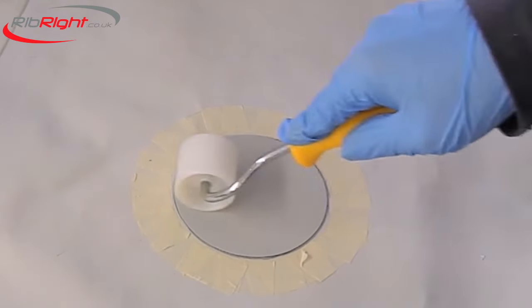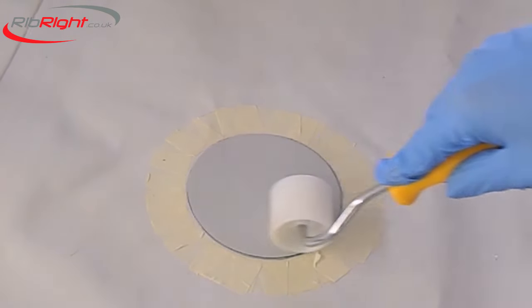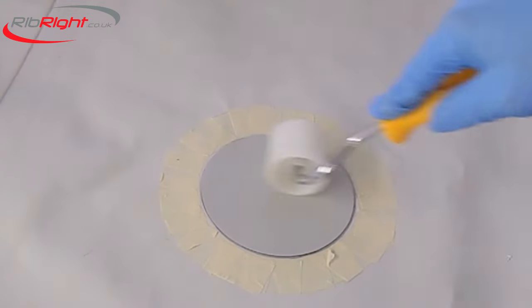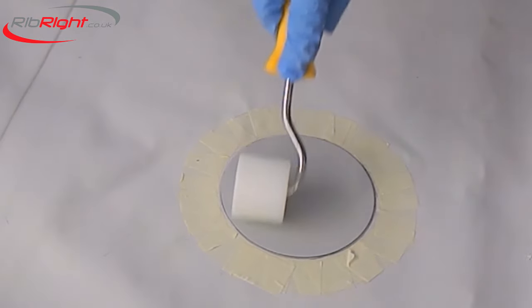Then use your roller to roll from the middle out. This will ensure that the layers of adhesive bind together and that you remove any remaining air bubbles.